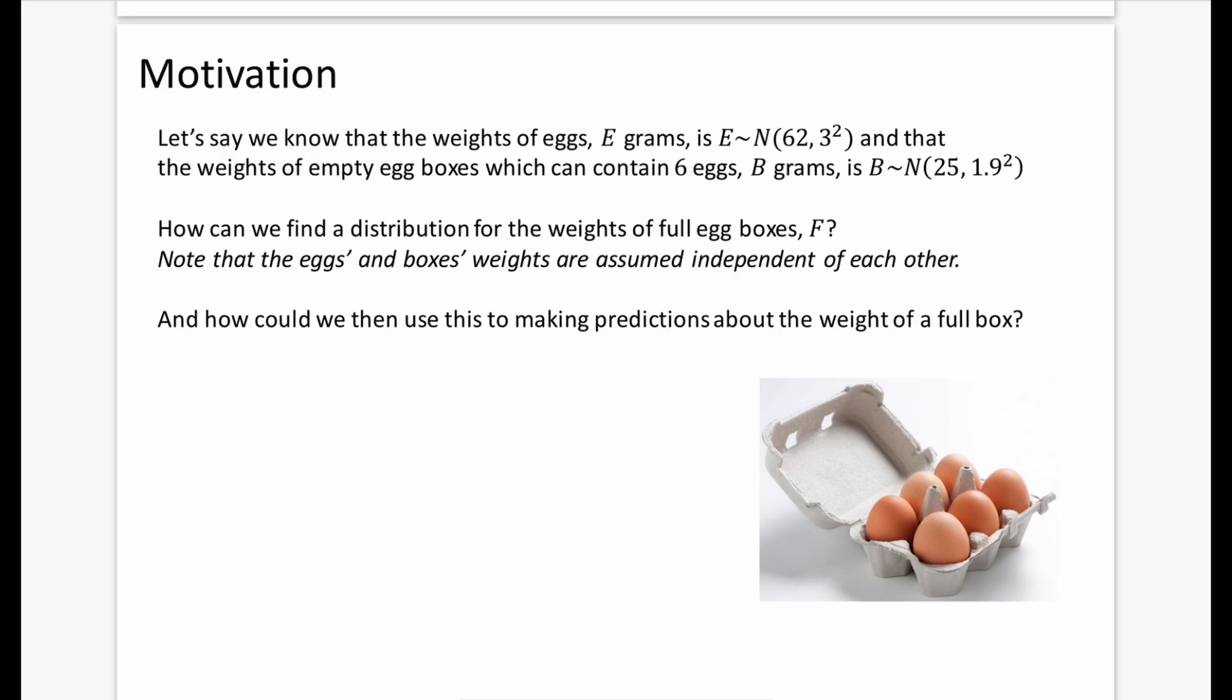Well, I guess there are a few things that we could quite easily predict because inside a full box, we know that there are going to be six eggs plus one box. So if I was going to try and find the mean of a full box, I'm actually trying to find out the expected value of F. Remember that expected value is just that. Well, I imagine it's probably going to be the expected value of these six eggs. So six lots of 62 plus the expected value of this part here, which is 25. That kind of makes sense, right? You would expect the full box to be six lots of the eggs plus a box. So six times 62 plus 25.